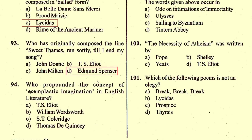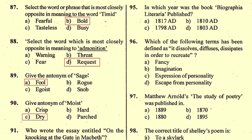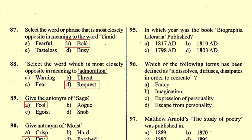Question number 94: Who propounded the concept of esemplastic imagination in English literature? In 'Biographia Literaria', Coleridge has a chapter titled 'On the Imagination or Esemplastic Power.' The right option is C, Samuel Taylor Coleridge. Question number 95: In which year was 'Biographia Literaria' published? It was originally published in 1817, so the right option is A.